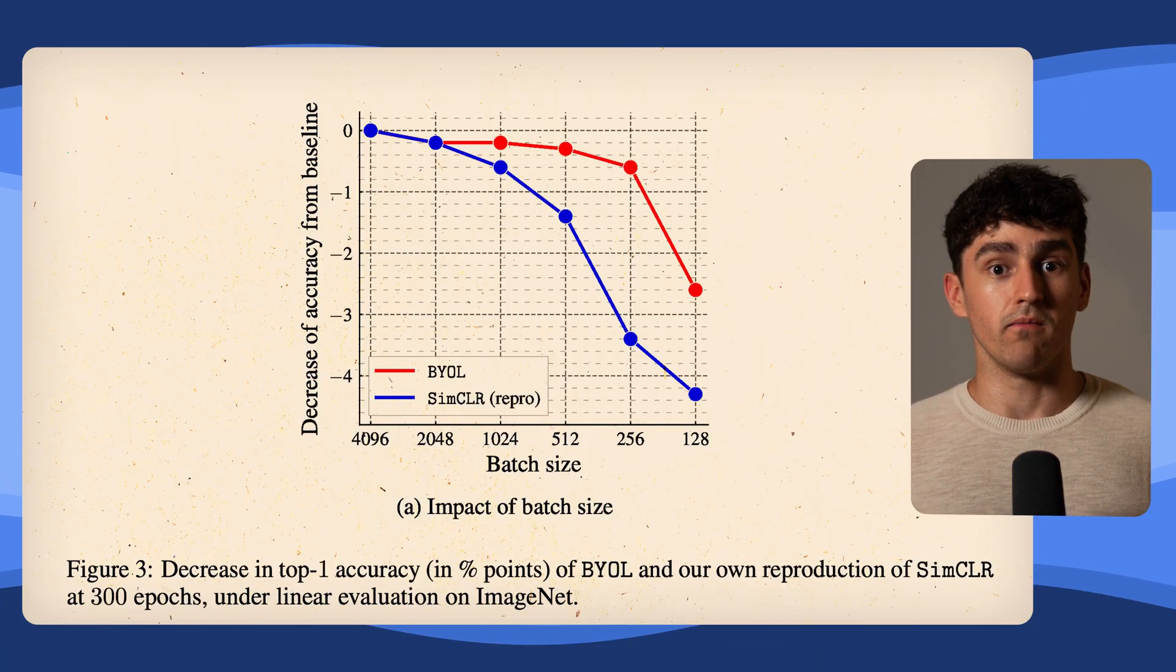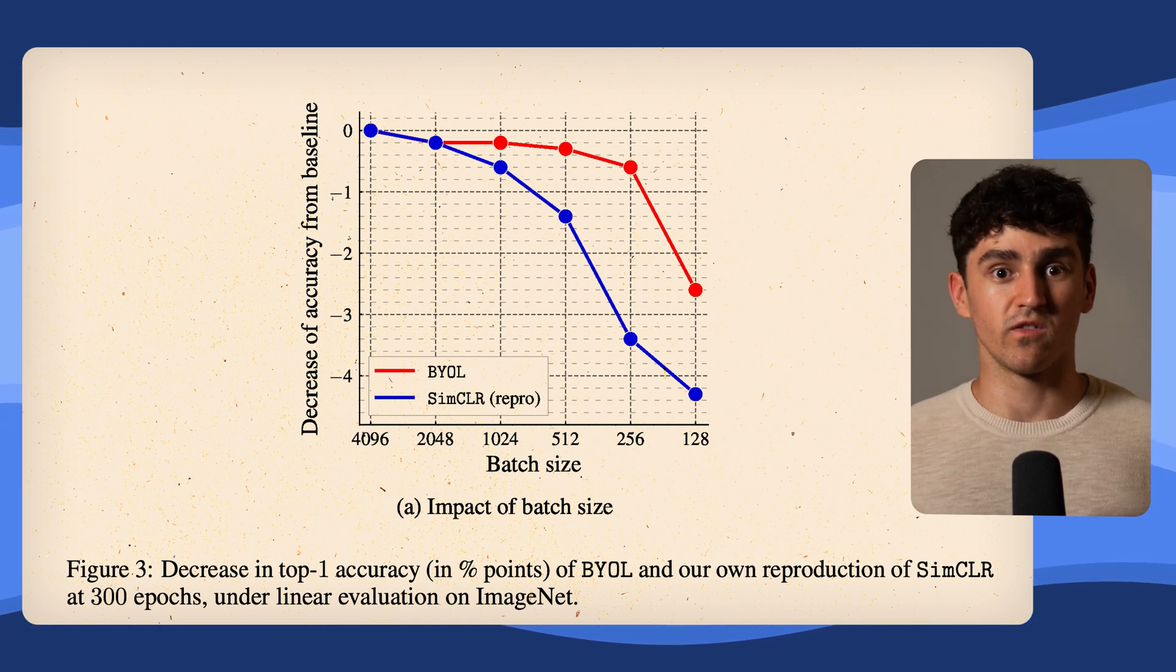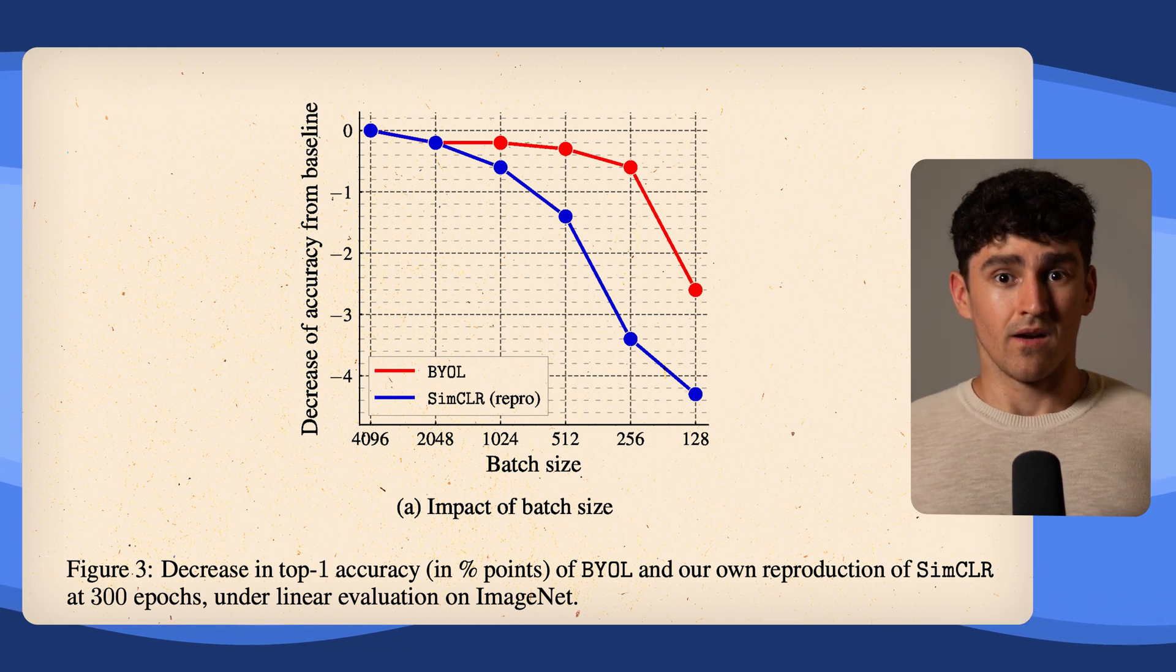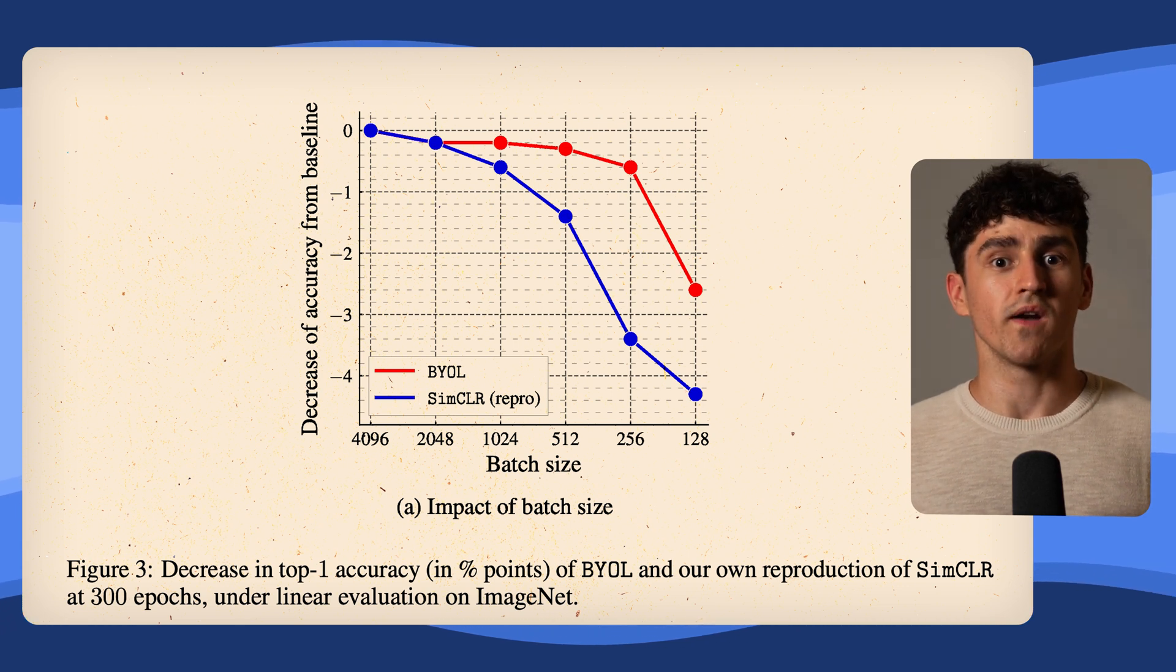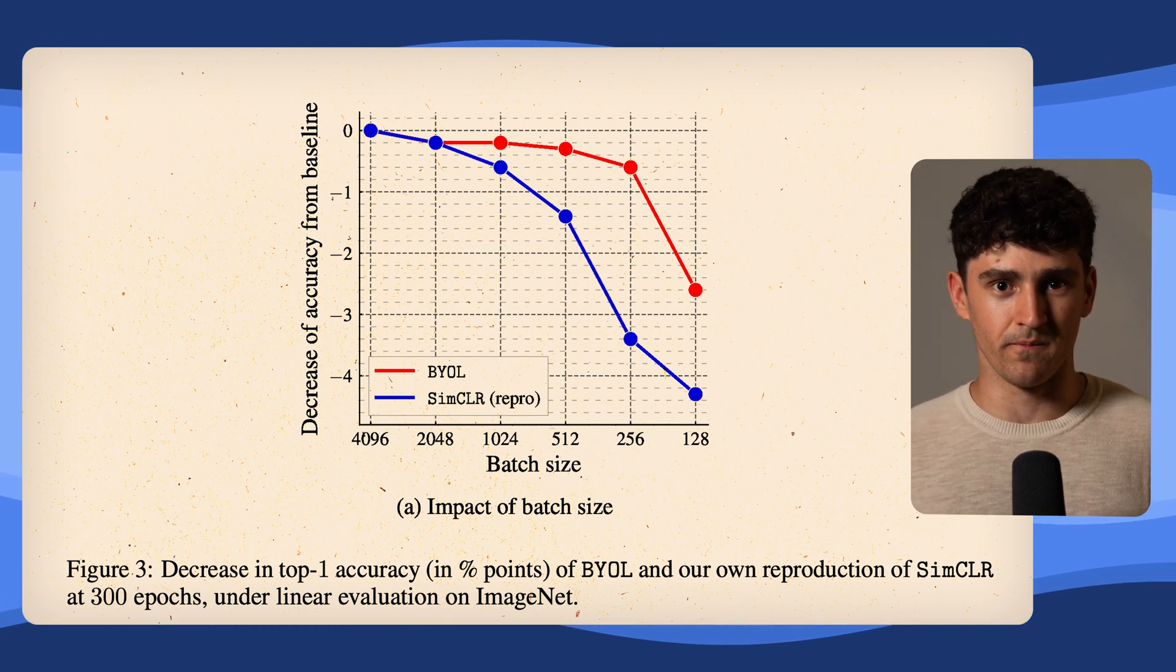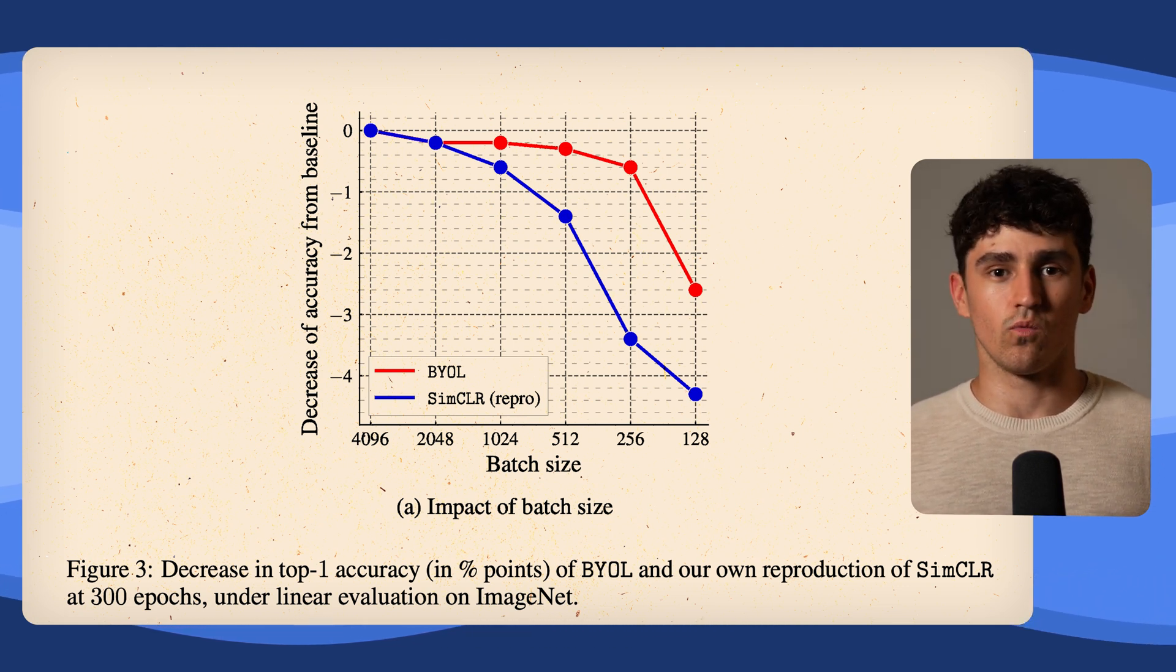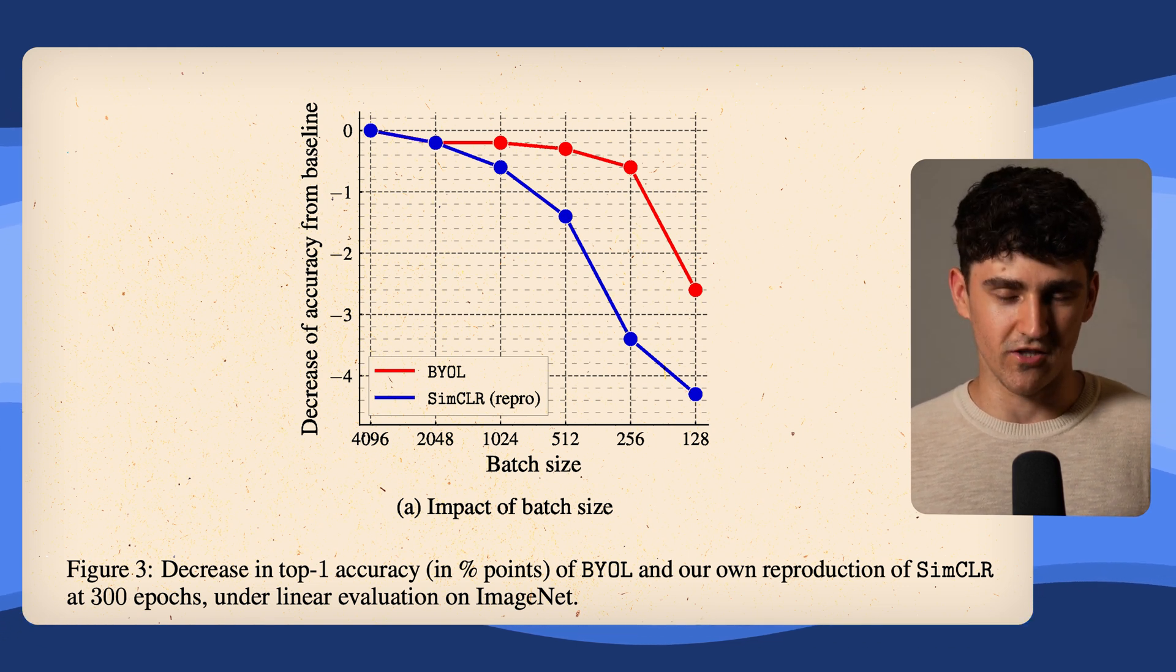When it comes to the effects of the batch size, the superiority of BYOL to SimCLR is obvious. BYOL is far less sensitive to smaller batch size than SimCLR, which makes sense. When reducing the batch size to only 256 samples, BYOL's top-1 accuracy only drops by 0.6%, while for SimCLR it drops by 3.4%. The large drop that comes with reducing the batch size to 128 samples is due to the effects on the batch normalization layer.